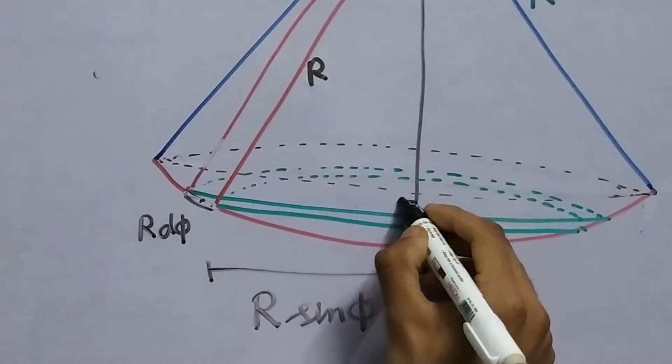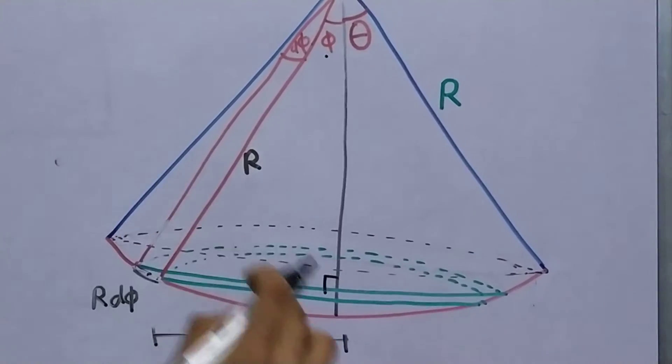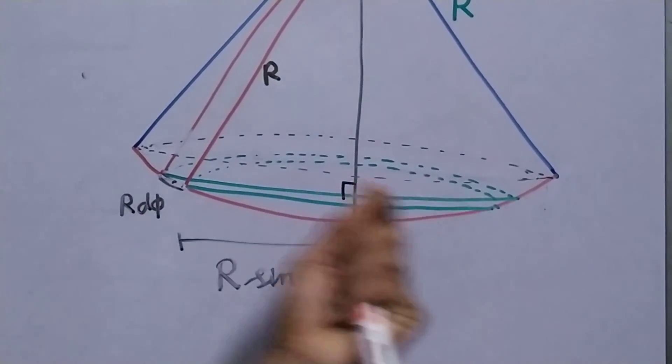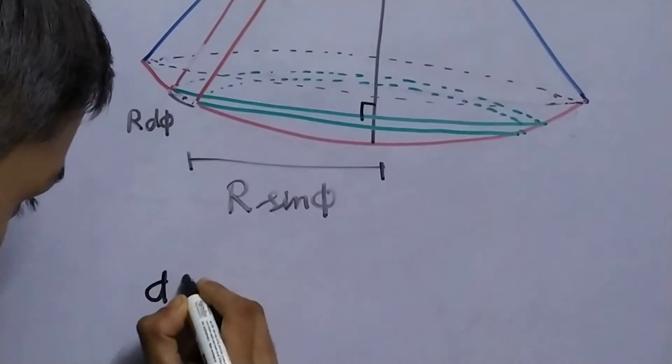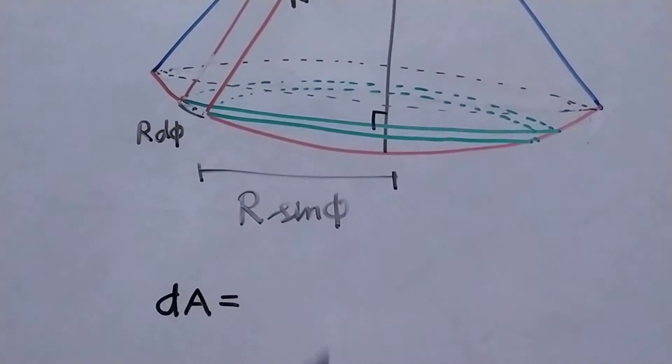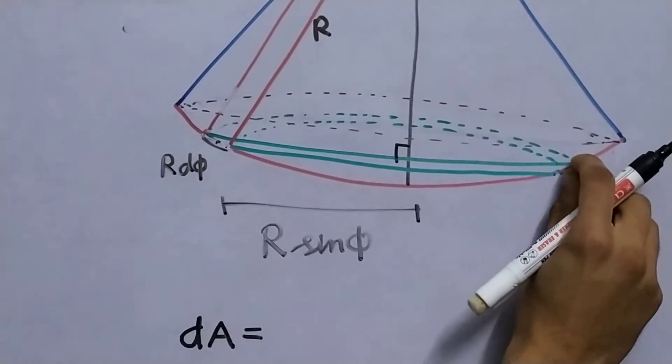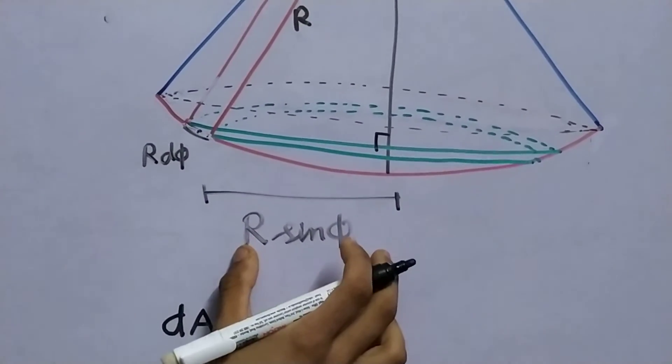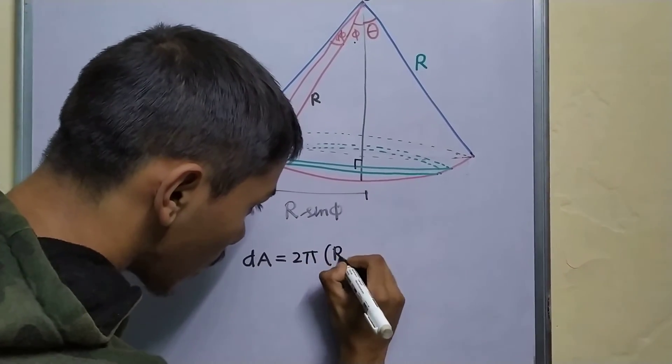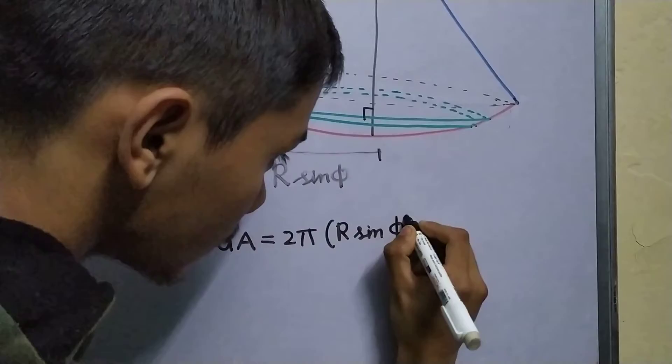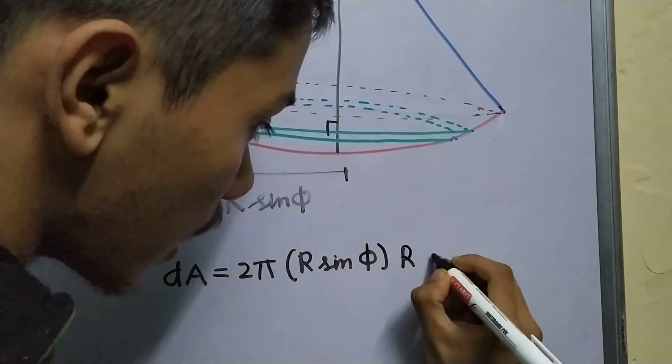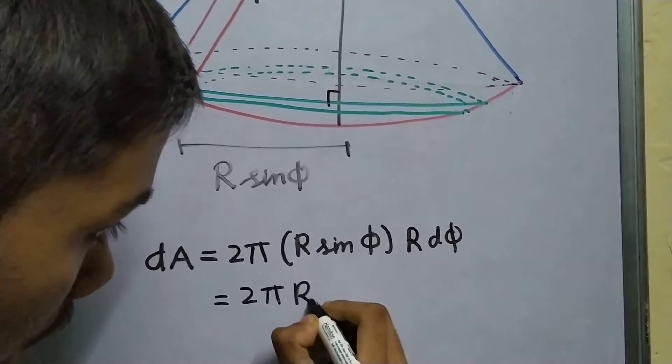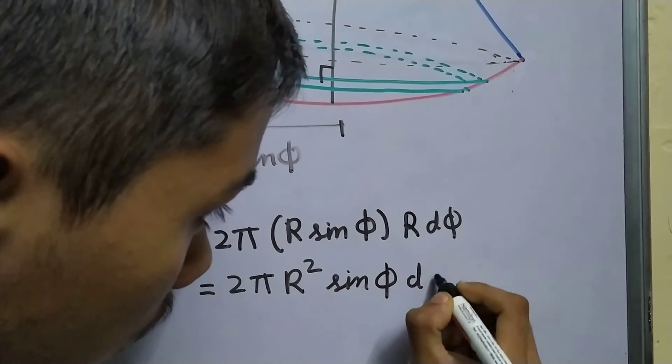If you look at this triangle right here, sin phi will be perpendicular upon hypotenuse. So, the perpendicular will be r sin phi. Now, the area of this ring, let me call this dA. Since this is an infinitesimal area, will be the perimeter of this ring times the thickness. So, the perimeter is 2 pi r, but r here will be r sin phi. Here is a 2 pi r sin phi times the thickness which is r d phi. This will be 2 pi r square sin phi d phi.